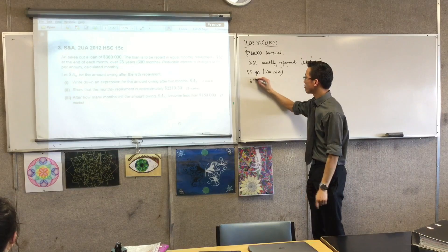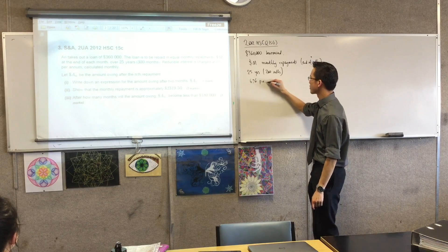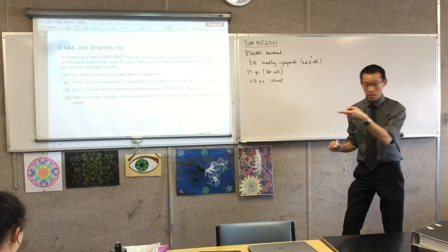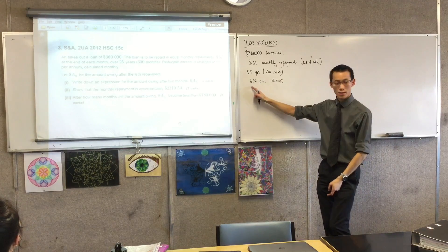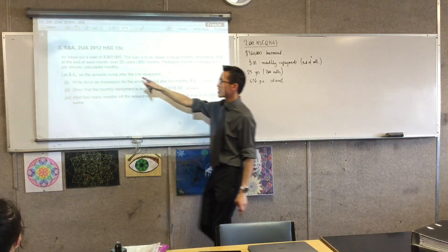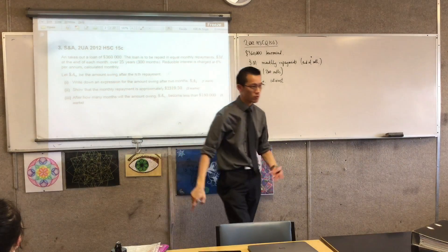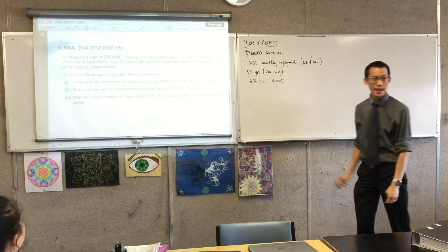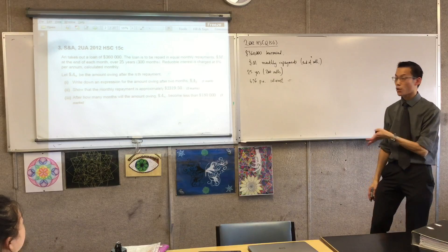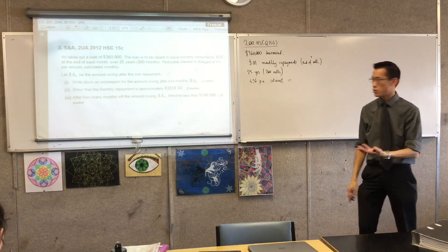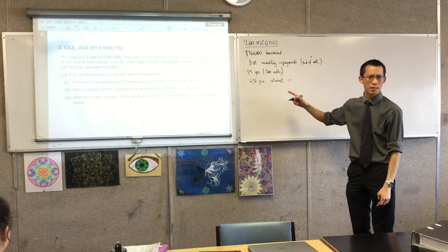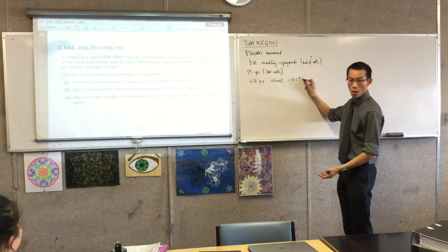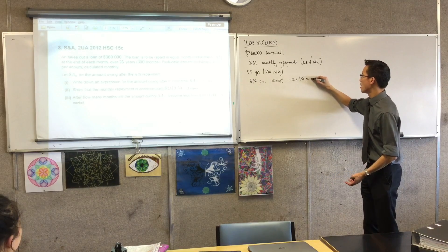6% per annum interest. Now while I'm at it — even though the interest rate is per annum, they actually calculate it 12 times a year. So I'm going to write a per-month interest rate at the same time. What does that add up to per month? That's half a percent, so 0.5% per month.